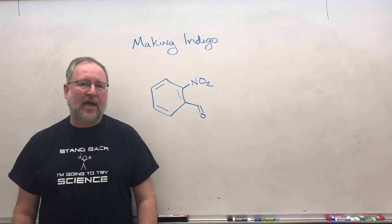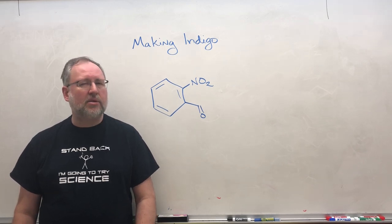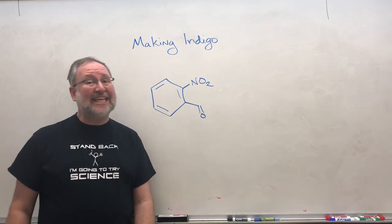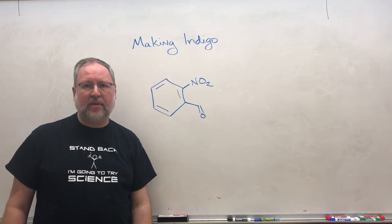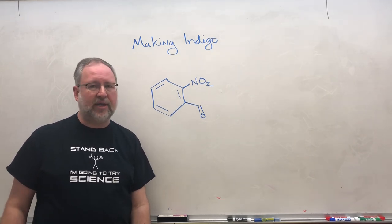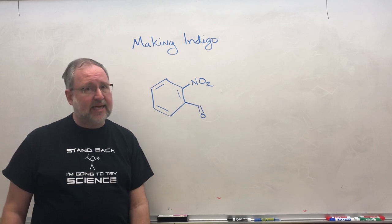In preparation for that I want you to do a little bit of research. So the lab that we're going to do when we get back is making the dye indigo. Indigo is a blue pigment. You can extract it from natural sources from the indigo plant and also you can synthesize it in the lab.